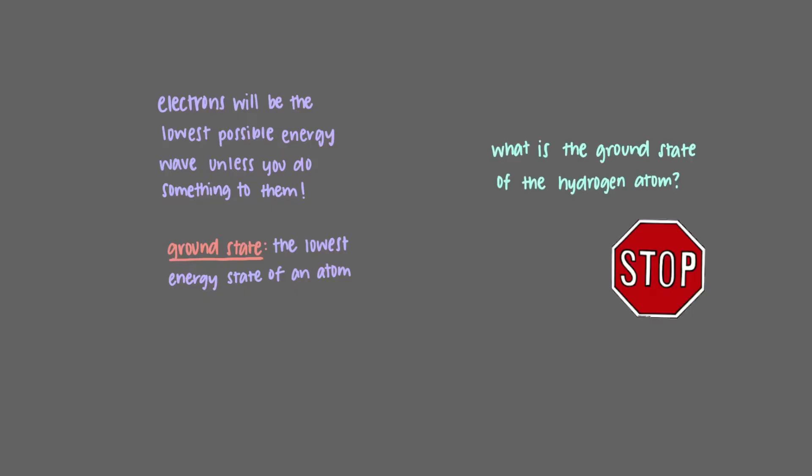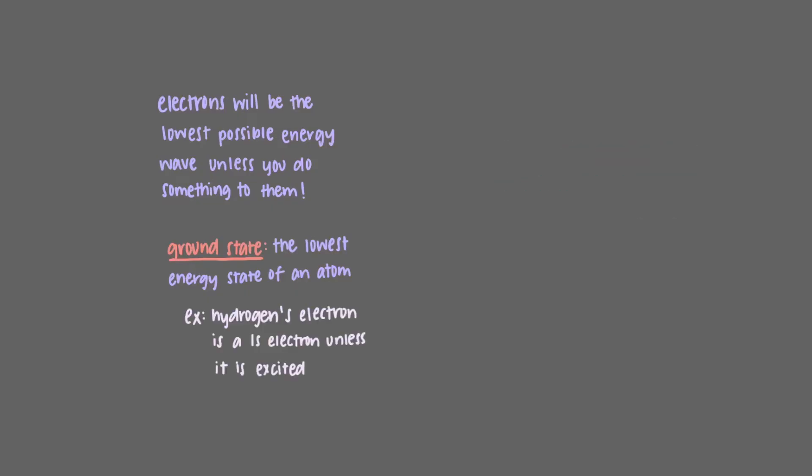One thing we have already intuited is that electrons will be the lowest possible energy wave unless you do something to them. We call the lowest energy state of an atom its ground state. What is the ground state of a hydrogen atom? Hydrogen's electron is a 1s electron unless it is excited.